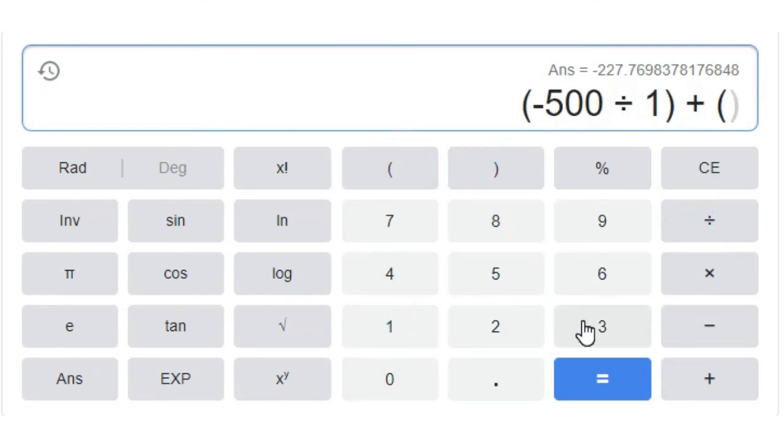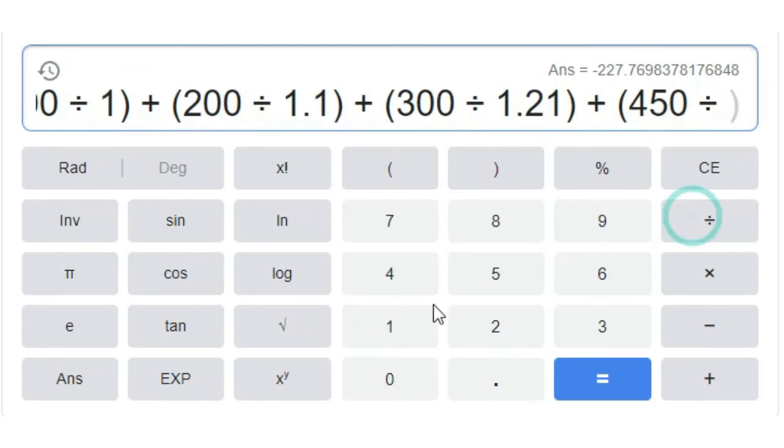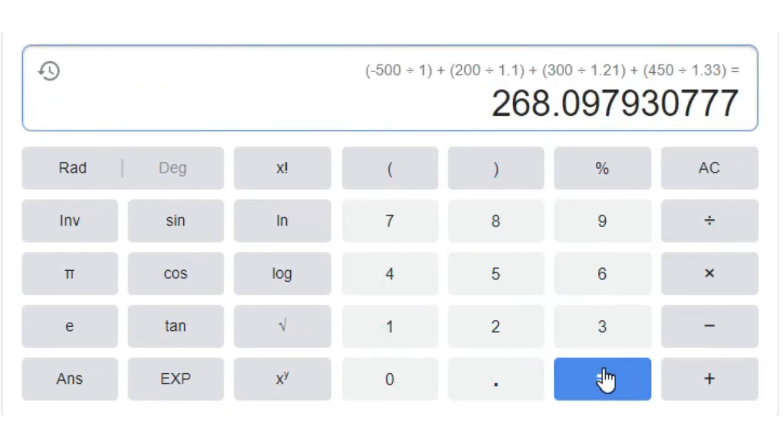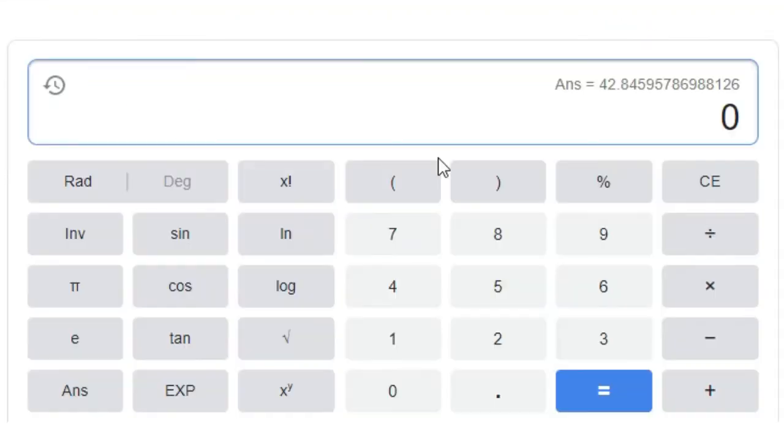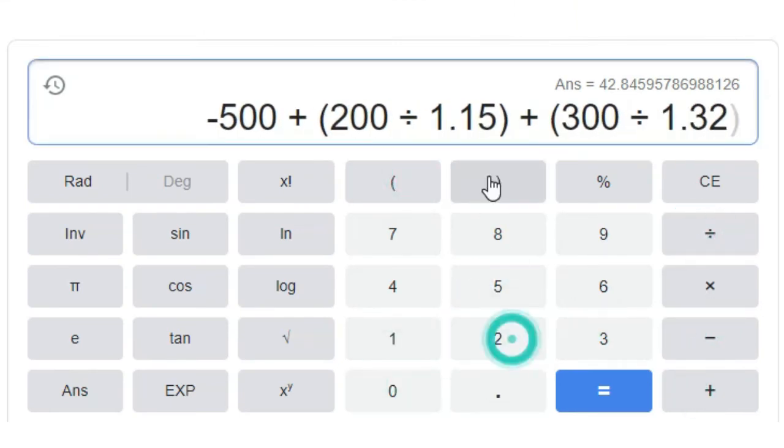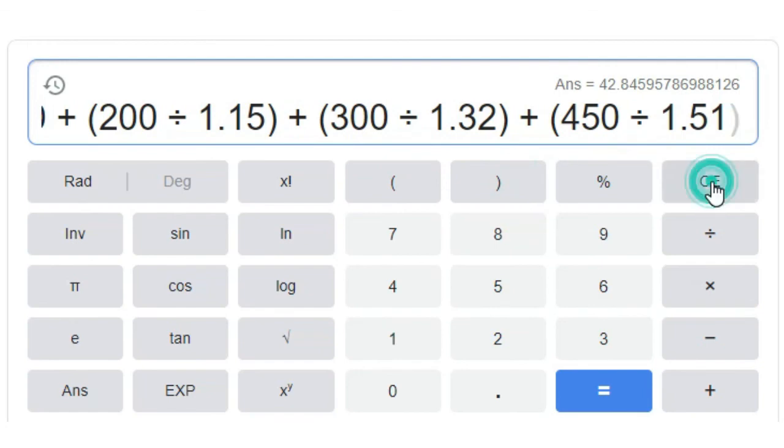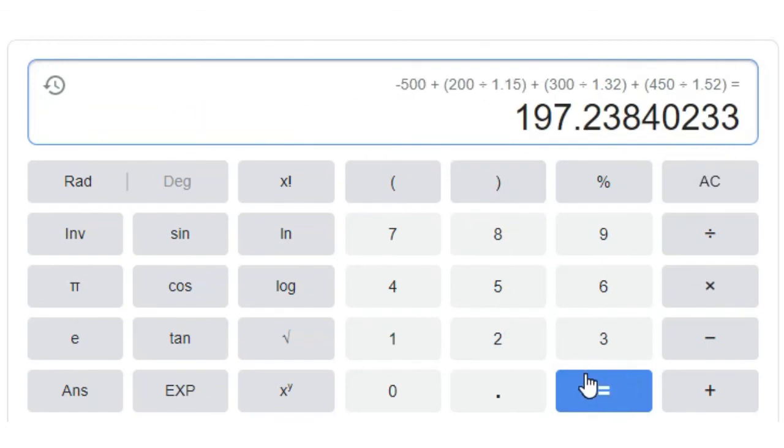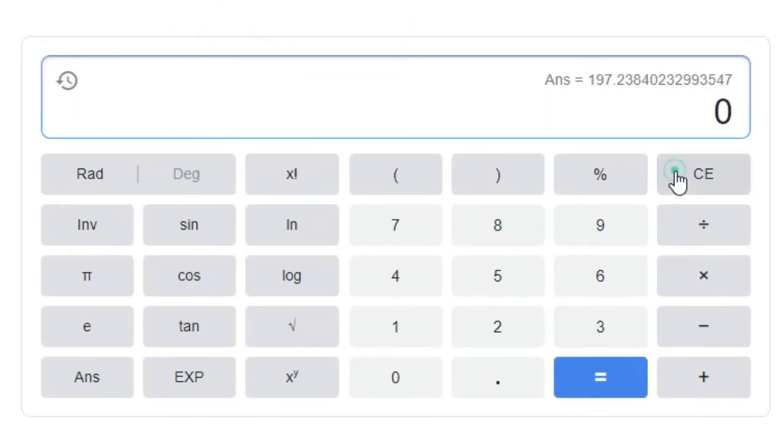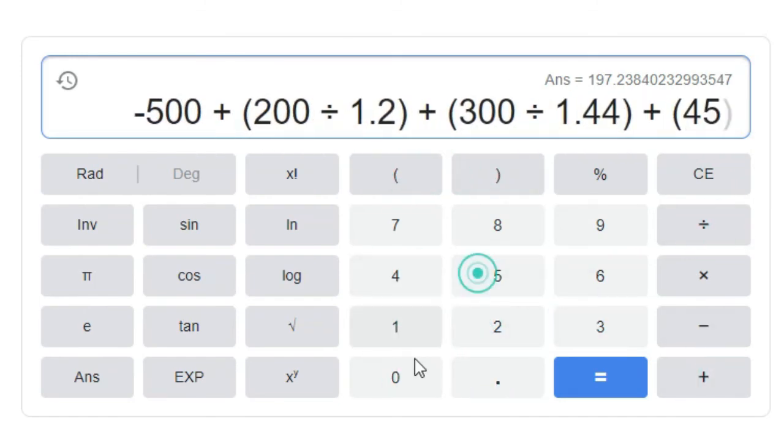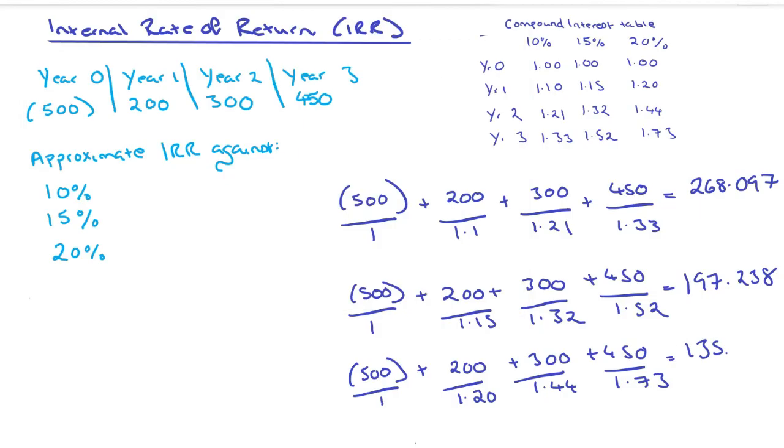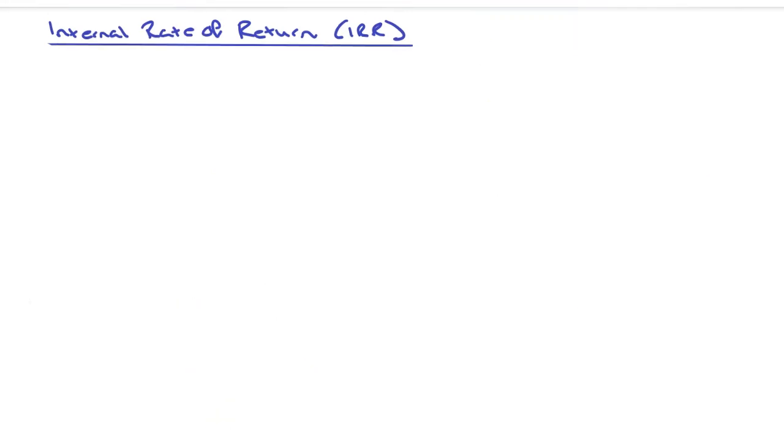At 10% the net present value is £268, at 15% it's £197, and at 20% it's £135. We'd go with the third one there because that's the closest to zero.